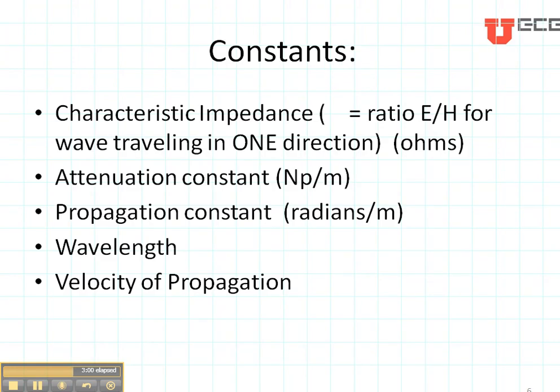Now the first thing we need to do is calculate several constants. The first constant that we'll be interested in is eta. That is the ratio of the electric to the magnetic field for a wave traveling in one direction. For instance, eta is the ratio of the incident electric to incident magnetic or the reflected electric to the reflected magnetic.